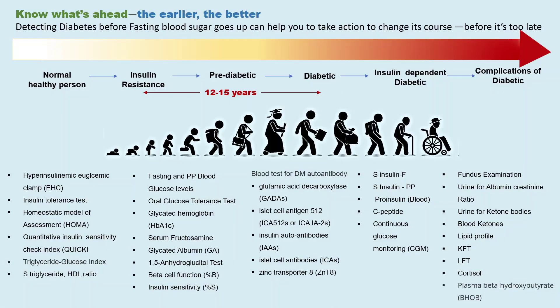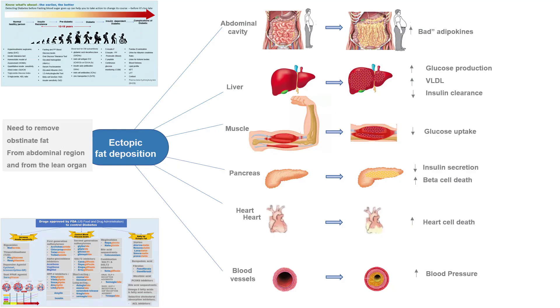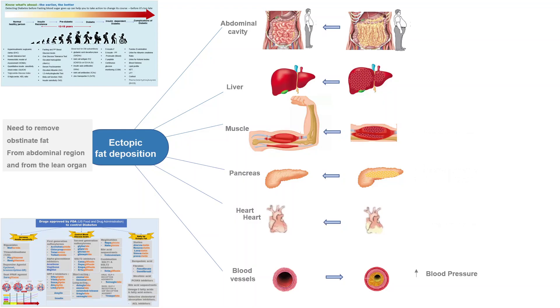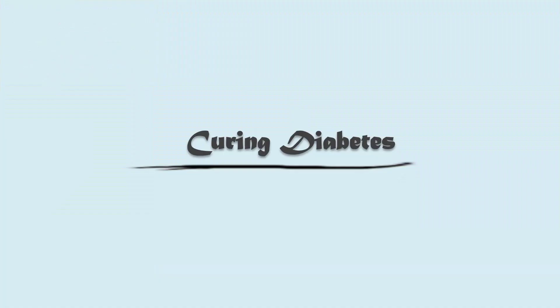About reversing diabetes: advanced diagnostic techniques help diagnose diabetes in the preliminary stages. The earlier you detect diabetes, the lesser the damage to vital organs, blood vessels, and nerves, and the easier it is to reverse diabetes. In order to reverse diabetes, in addition to keeping blood sugar level in a normal healthy range, one needs to remove the stubborn fat from the belly region and from various organs. About 70% of diabetics are suffering from non-alcoholic fatty liver disease. Similarly, fat has to be reversed from the pancreas, heart, blood vessels, kidneys, and other organs.